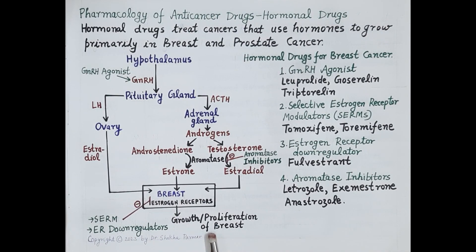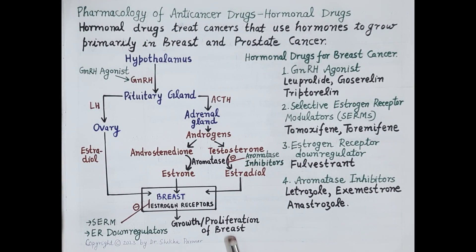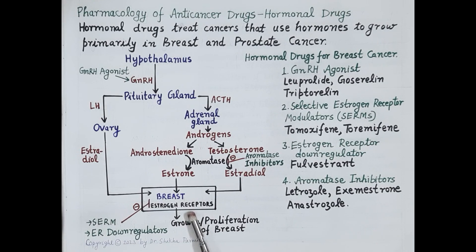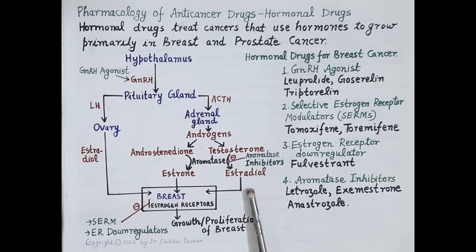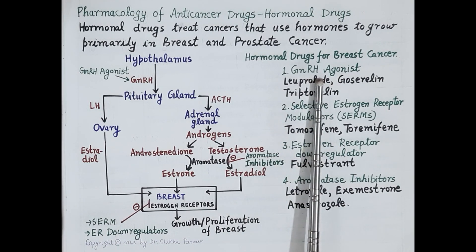Estrone and estradiol bind to estrogen receptors on breast cells and cause growth and proliferation. Seventy-five percent of breast cancers are due to increased estrogen. In breast cancer, the overall purpose of hormonal therapy is to prevent the action of estrogen on the estrogen receptor by blocking the estrogen receptors. There are four types of drugs used in breast cancer.